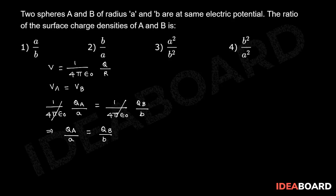So here, instead of qA, let us write sigma A into A square. That means, we know surface charge density sigma is equal to charge per area, or q is equal to sigma into A. q is equal to sigma into area of the sphere, surface area, 4 pi A square.